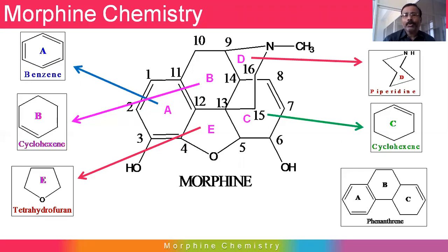There are two hydroxyl groups. The first hydroxyl group is substituted at the C3 position and is attached to the phenyl nucleus, so it is called a phenolic hydroxyl group. The second hydroxyl group is substituted at the C6 position and is attached to cyclohexene, so it is referred to as an allylic hydroxyl group.